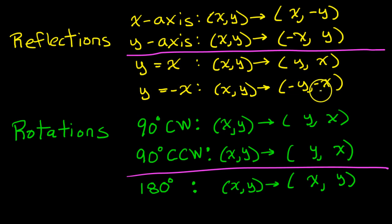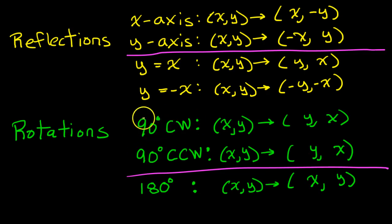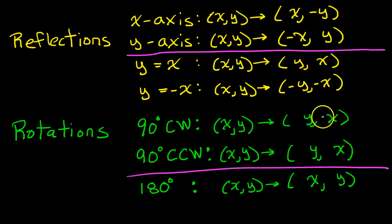The negative sign in y equals negative x kind of gives it away. For a 90-degree clockwise rotation or a 90-degree counterclockwise rotation, one of these will be negative. Clockwise is like the normal way — that matches up with the positive direction — so the first thing is a positive y, and then the opposite of x. Counterclockwise is the opposite of clockwise, so the first thing is the opposite of y, and then x is just normal. For 180 degrees, it's the opposite of x and also the opposite of y. Memorize this list.